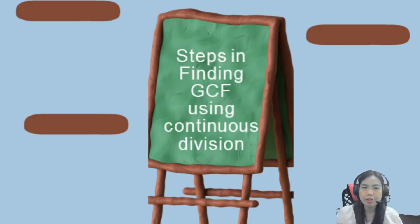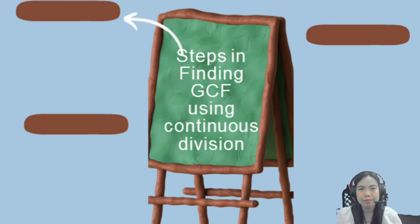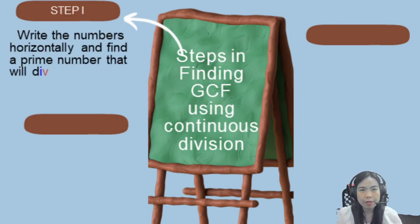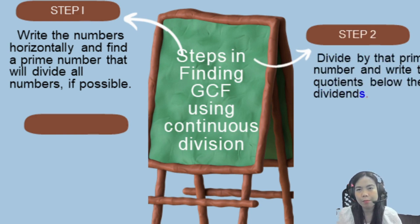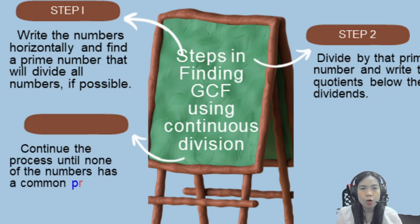Steps in finding the GCF — the greatest common factor — using continuous division: Step 1, write the numbers horizontally and find the prime number that will divide all numbers if possible. Step 2, divide by that prime number and write the quotients below the dividends. Step 3, continue the process until none of the numbers has a common prime divisor.